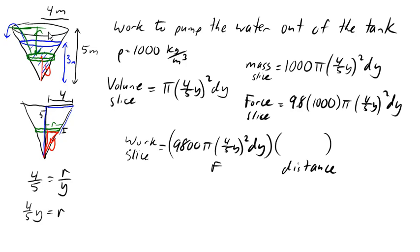Now the entire height was 5. This distance was Y. And so that leaves as the remaining distance, 5 minus Y. So 5 minus Y is the distance that we have to lift the slice.